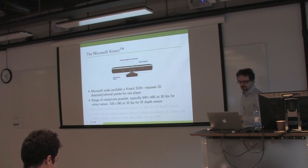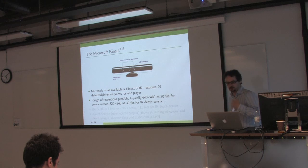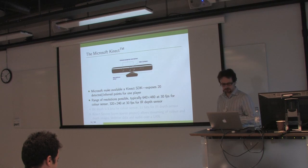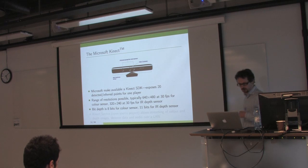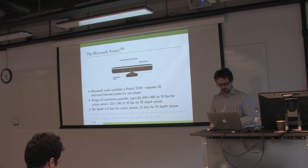You can configure it to use a range of resolutions and frames per second. These are the typical ones that people use for the color sensor and for the depth sensor. At 30 frames per second, it's quite a lot of data in terms of uploading it to a cloud. The bit depth is eight bits for the color sensor, eleven for the infrared depth.